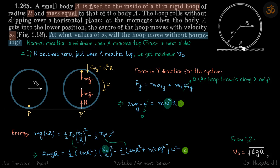If this mass goes up, the hoop will try to break contact from the bottom. We don't want that to happen. So what should be the maximum velocity such that the hoop does not lose contact? As this mass goes up and comes back down, at what point will the normal reaction be minimum?